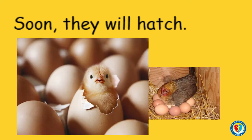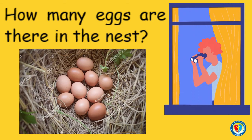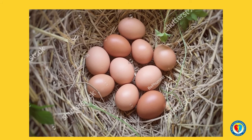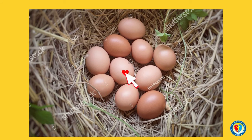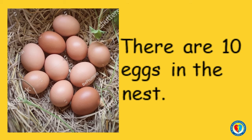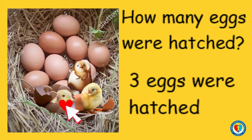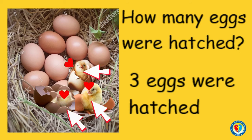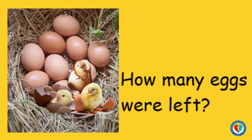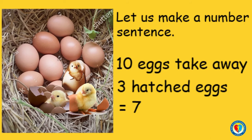Soon they will hatch. Look how many eggs are there in the nest. Let's count: one, two, three, four, five, six, seven, eight, nine, ten. There are ten eggs in the nest. How many eggs were hatched? Let's count: one, two, three. Three eggs were hatched.